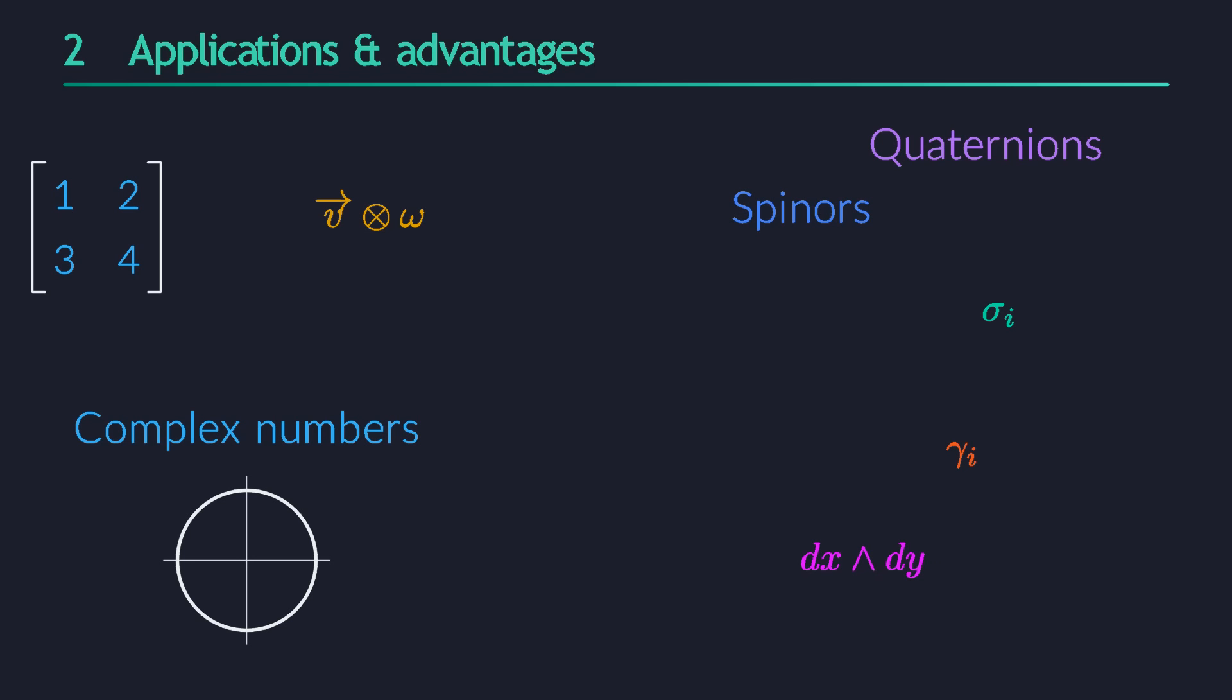Not only does it unify these, it also clarifies them. The multiplication rules for complex numbers or quaternions follow very naturally from the properties of our new geometric product. The new product is complex multiplication in 2D, and it is quaternion multiplication in 3D.